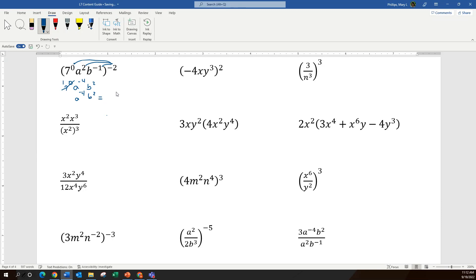To finish the problem, b squared stays on the top of the fraction, and a to the 4th needs to move to the denominator so that we have a positive exponent. So using three different rules, we have our simplified answer.